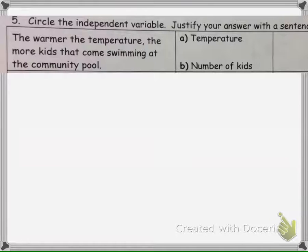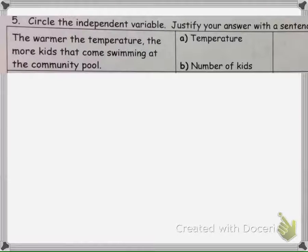We are asked to circle the independent variable, so we're going to identify the independent variable and then justify why we picked that — explain why. It says the warmer the temperature, the more kids that come swimming at the community pool.